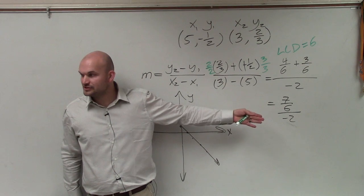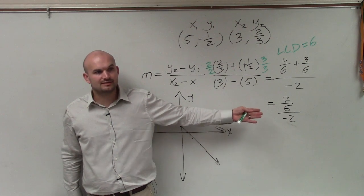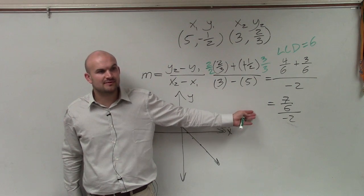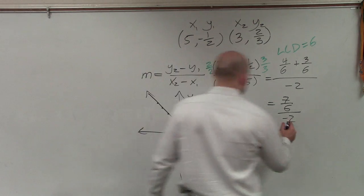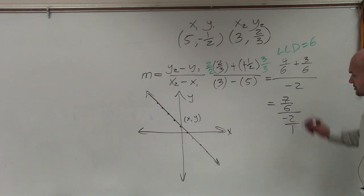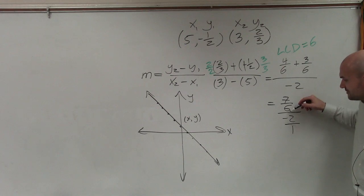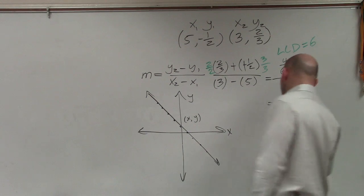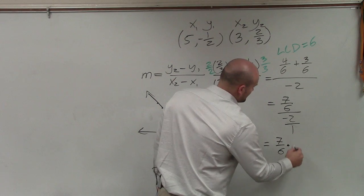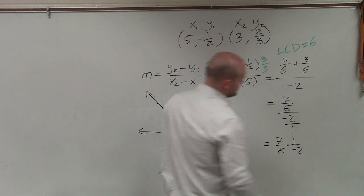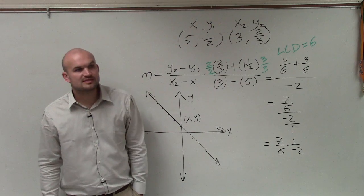Whenever we're doing division with fractions, we don't like dividing with fractions. Instead, we like to multiply by the reciprocal. So what I can do is rewrite this as negative 2 over 1. So now, I'm taking a fraction divided by another fraction, which we don't divide. We rewrite as the product of its reciprocal.